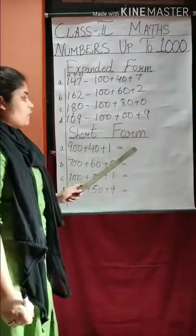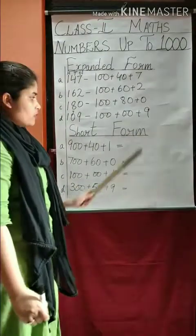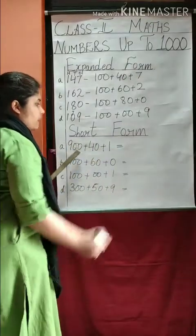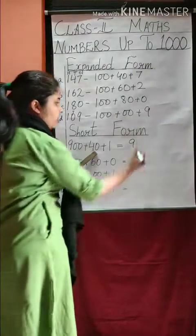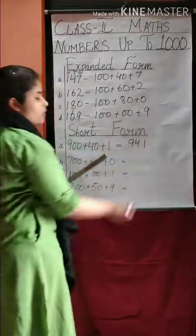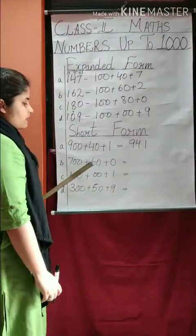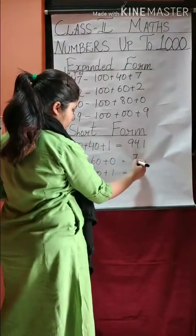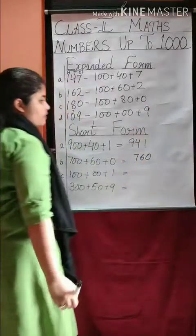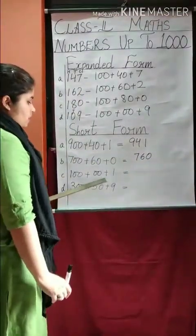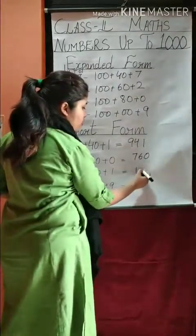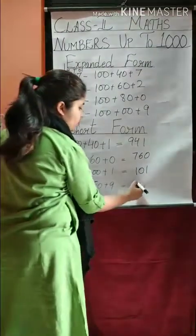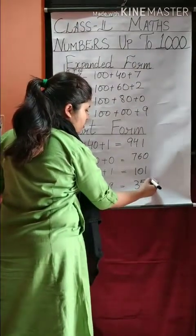Next is short form. Numbers are given in expanded form and you have to write in short form. First is nine hundred forty-one — we write 941. Next is seven hundred and sixty — 760. Next is one hundred and one — 101. Last is three hundred and fifty-nine — 359.